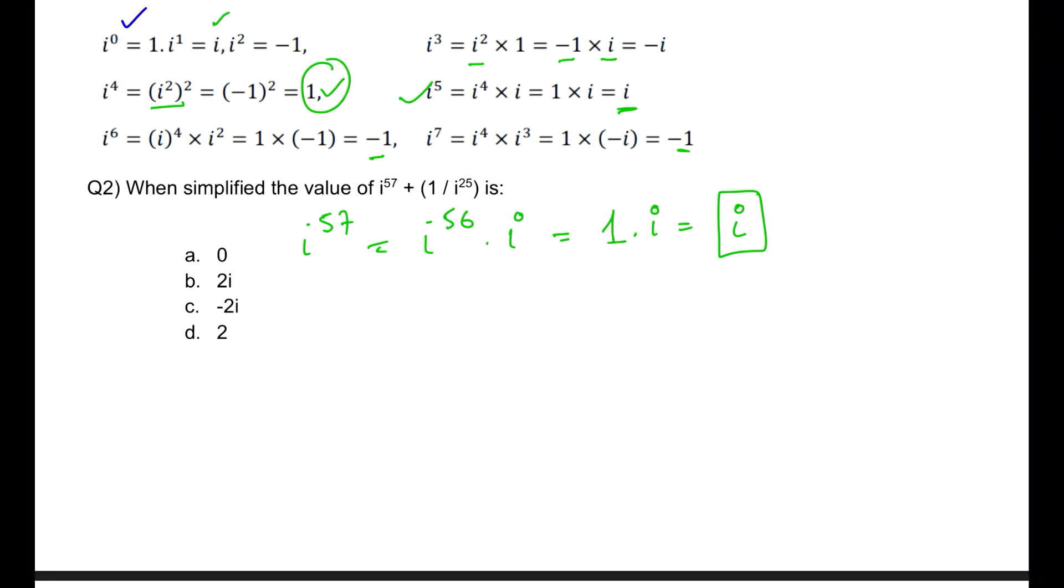Let's have a quick look over a question. When simplified, the value of I to the power 57 plus 1 by I to the power 25, what is the number which we are expecting to get? Please understand, I to the power 57 can be broken as I to the power 56 into I. What is the purpose behind breaking it into 56 and I? Because 56 is a multiple of 4. Therefore any multiple of 4 will actually eventually give me back a 1 only. So this equals 1 into I, which is just I.